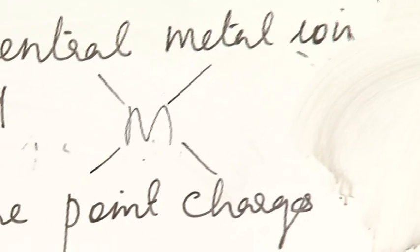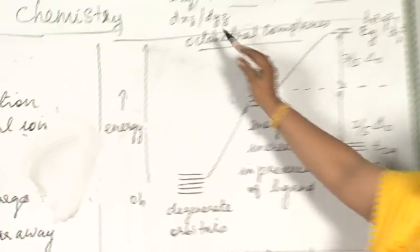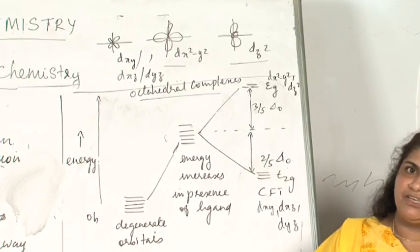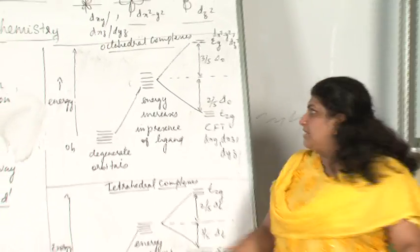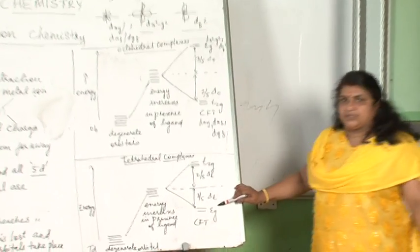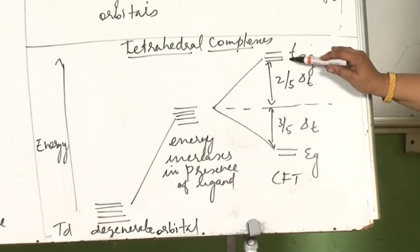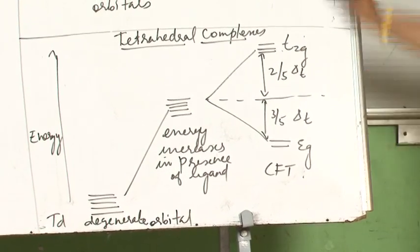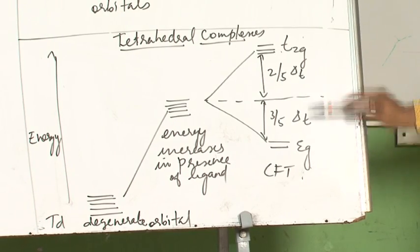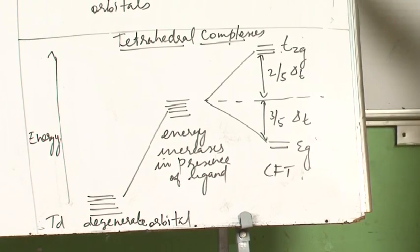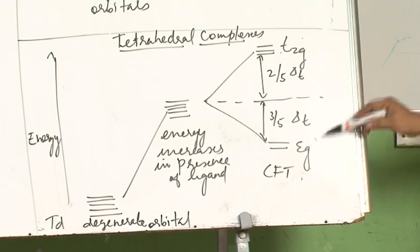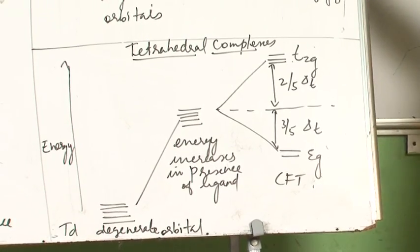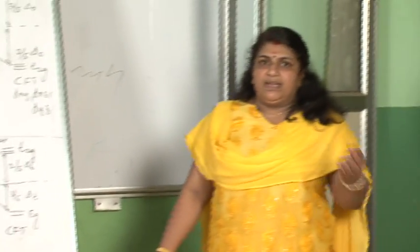Which orbital has to face more repulsion? The orbitals lying in between the axis will face more repulsion. Those lying along the axis will face less repulsion, so the diagram gets reversed. You can see t2g has gone up because it is lying in between the axis and faces more repulsion. eg has got reversed and gone down. But the splitting gap, the crystal field splitting gap or the splitting energy, is small in the case of tetrahedral complexes whereas in octahedral complexes it is high.